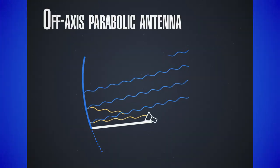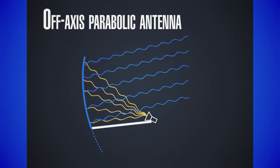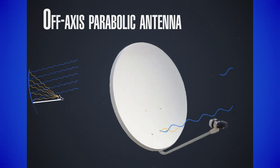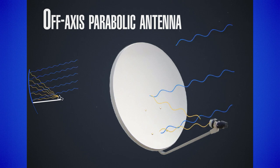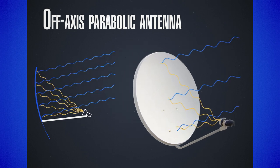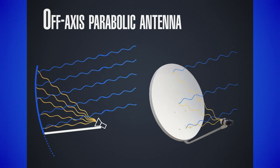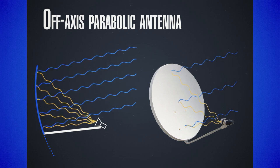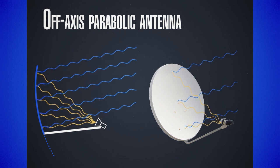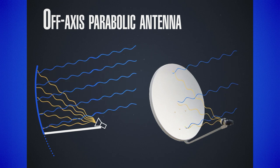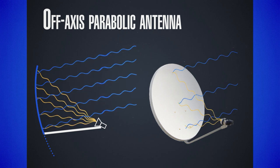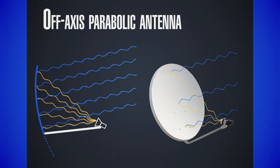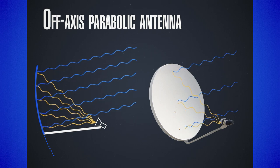If we want to eliminate the effects from the support struts, we have to feed the antenna from the side and in this way not cover its useful surface area. This is achieved by taking a non-central part of the paraboloid so that the support can still be in the focus, but this focus is no longer in the geometrical center of the piece from the paraboloid we have. It is positioned sideways and we call these antennas off-fed paraboloid reflectors. These are very often used for TV broadcasting, so you have almost certainly seen them on buildings around towns.